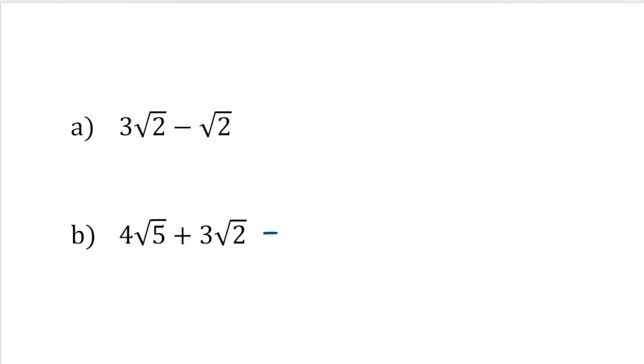Okay, so let's just do a final couple of examples. Here we've got 3 root 2 minus root 2. Well, this is the same type of thing, isn't it? So 3 root 2 minus 1 root 2 will be 2 root 2.